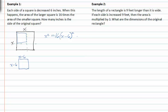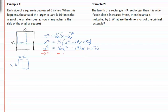We can FOIL x minus six squared and we get x squared is equal to sixteen times x squared minus twelve x plus thirty-six. We can now distribute the sixteen and we get x squared is equal to sixteen x squared minus one hundred ninety-two x plus five hundred seventy-six. We can now set the equation equal to zero by subtracting x squared from both sides, giving us zero on the left and fifteen x squared minus one hundred ninety-two x plus five hundred seventy-six on the right.